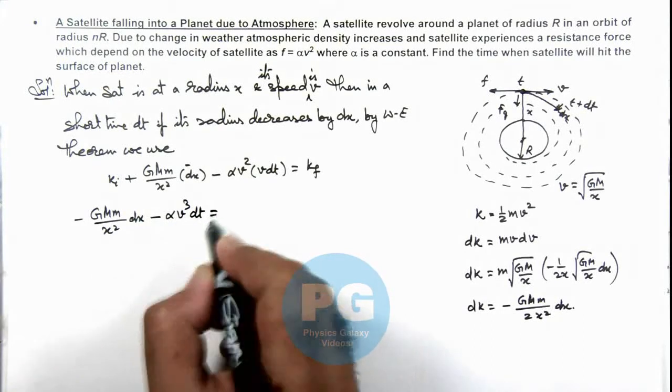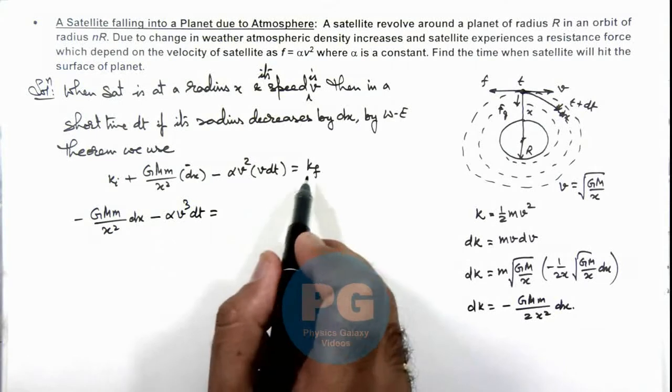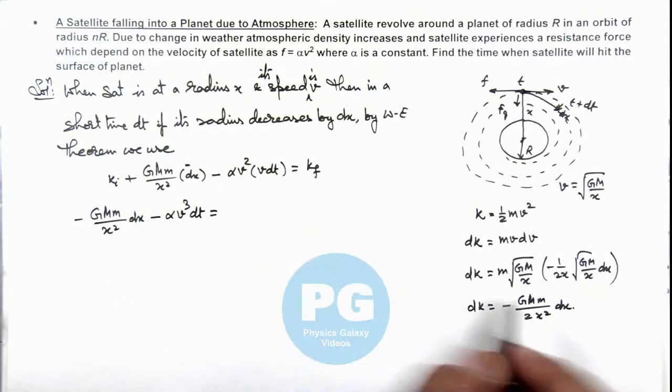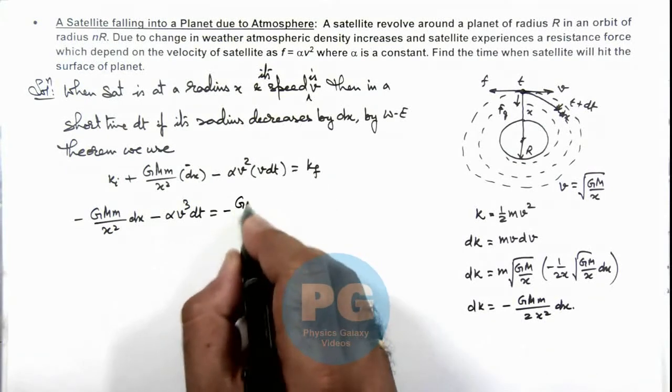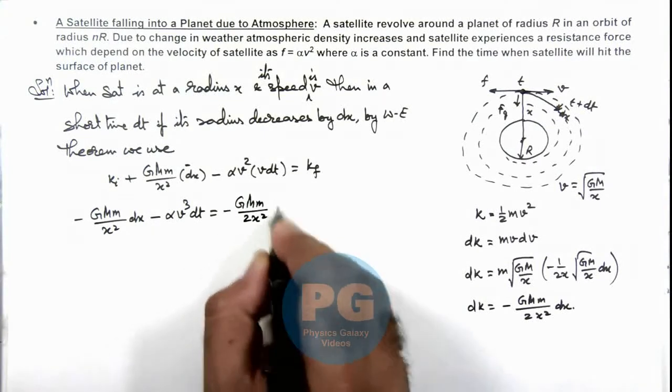The value of dk here is change in kinetic energy which can be written as -GMm/(2x²) dx.